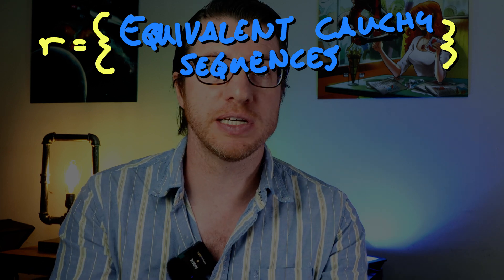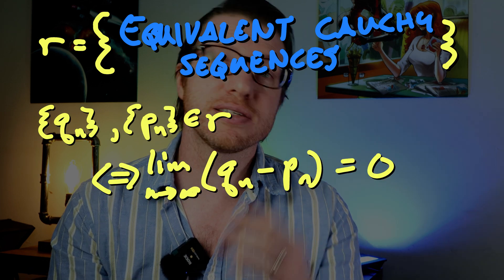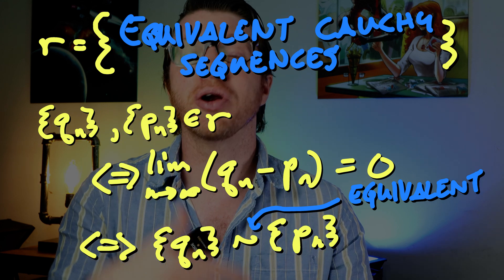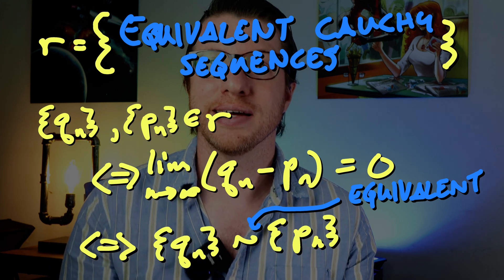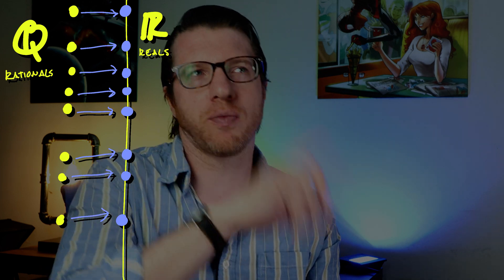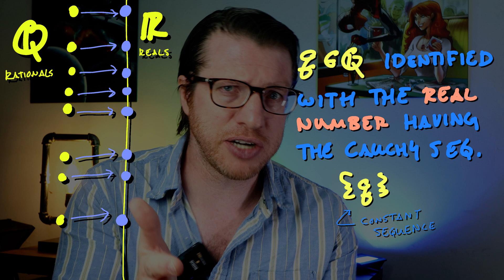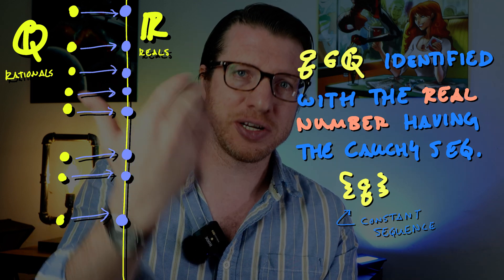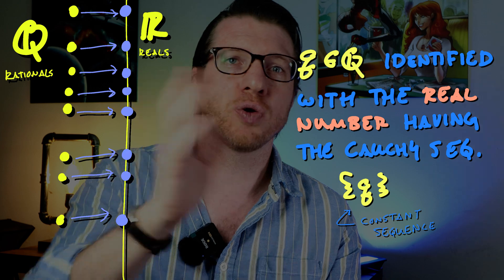Here is our definition: a real number is an equivalence class of Cauchy sequences where, if you take the difference between any pair of sequences in the class, that difference converges to zero. So pi isn't simply 3.14159 etc. — it is the collection of all sequences of rational numbers that converge to pi. We can also see that the rational numbers sit inside the reals: given a rational q, we take the equivalence class containing the constant sequence q, q, q, ... and that real number corresponds to q.